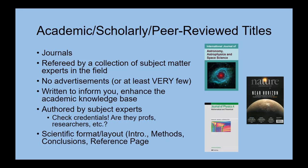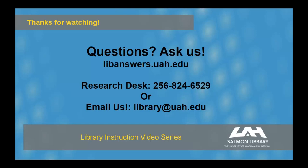Another thing to watch for is the format of the articles. An academic article often has a recognizable layout. You'll see a deliberate sectional division between areas such as an introduction, methods used, results discovered, and conclusions and references. This will leave your roadmap back to the sources they themselves used. While not always so tidily arranged, if you do see this format, you are likely headed in the right direction. Some examples of that might be Nature or the Journal of Physics.